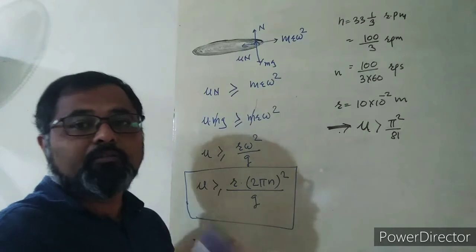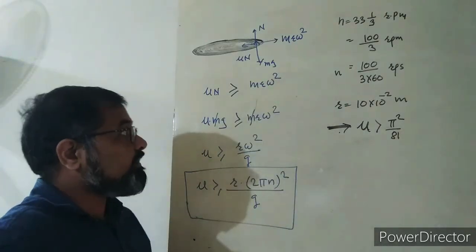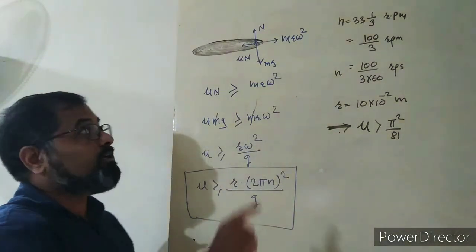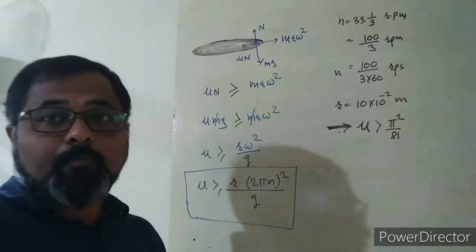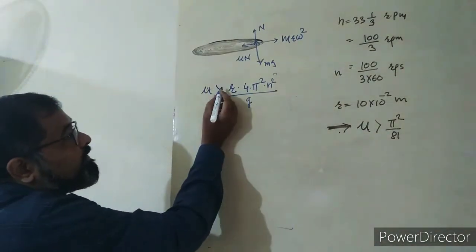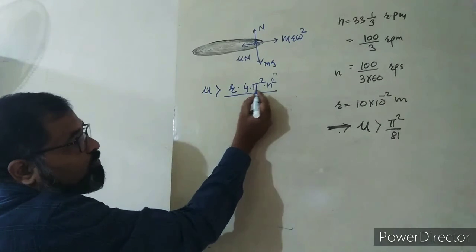Let me show the calculation. We have up to (2πn)² divided by g.